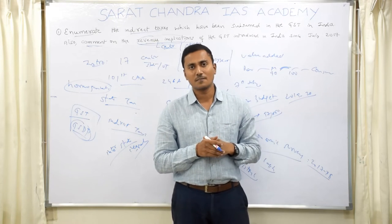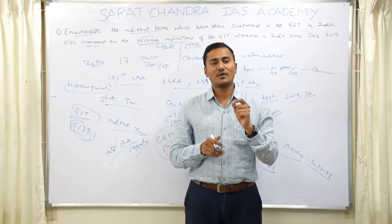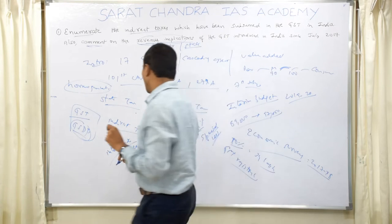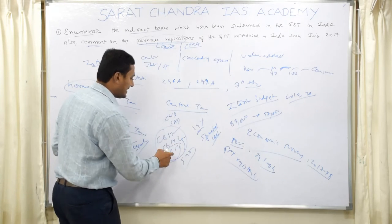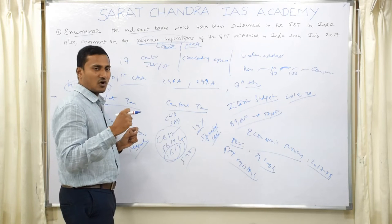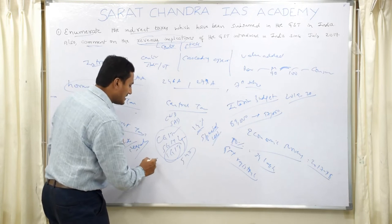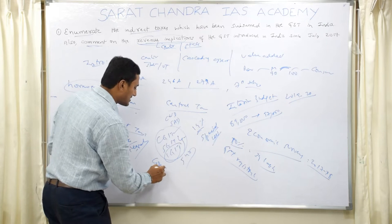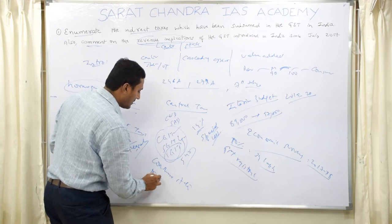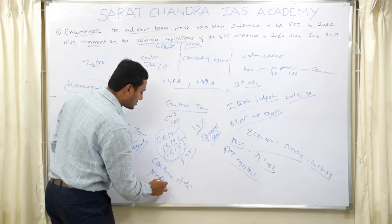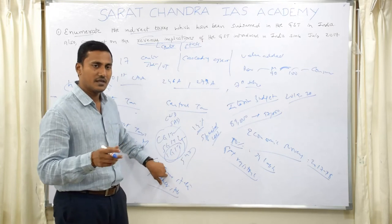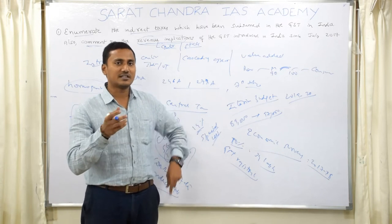You can also mention a positive implication: Arun Jaitley stated that 20 state governments reported at least a 14% rise in their revenue because of GST. Finally, in the conclusion, after discussing all revenue implications, you can go beyond what is asked. Mention that fiscal federalism should be kept in mind when implementing GST, and if any changes are required they should be addressed. Also note that GST has improved ease of doing business in India and increased the efficiency of tax collection. Mention some other benefits of GST to conclude.